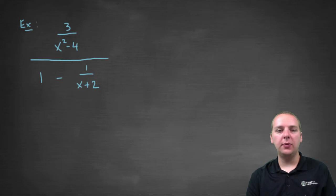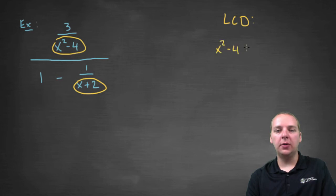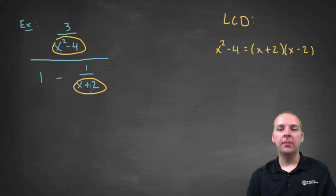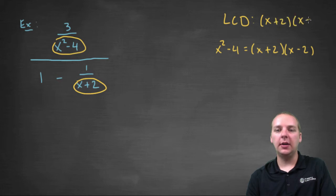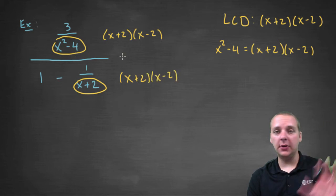So here we have three over x squared minus four, all divided by one minus one over x plus two. I've got a little mini-fraction here and here. So I want to find the LCD of those two. Now x squared minus four, as we know, is x plus two times x minus two. So it's got a factor of x plus two and x minus two. And this guy right here is just x plus two. So I think the LCD would just be x plus two times x minus two. So we'll multiply that to the numerator and denominator.